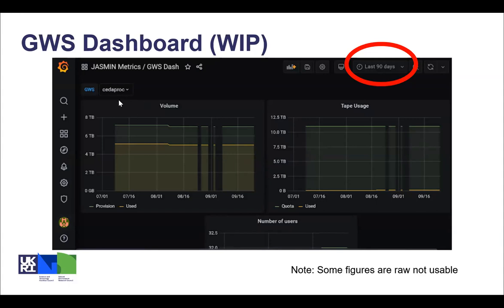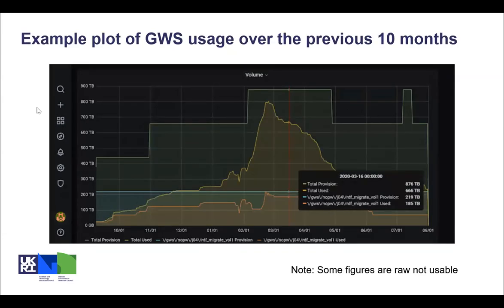On the left there's a drop-down where you can select the group workspace being viewed, and you can also view a specific volume or group workspace. This is a more advanced plot showing a more interesting group workspace. This specific group workspace at one time had four separate volumes. The green and yellow show the overall usage for all those volumes, and you can see where the volumes are added and taken away. The blue and orange show the usage for a specific volume in that group workspace.